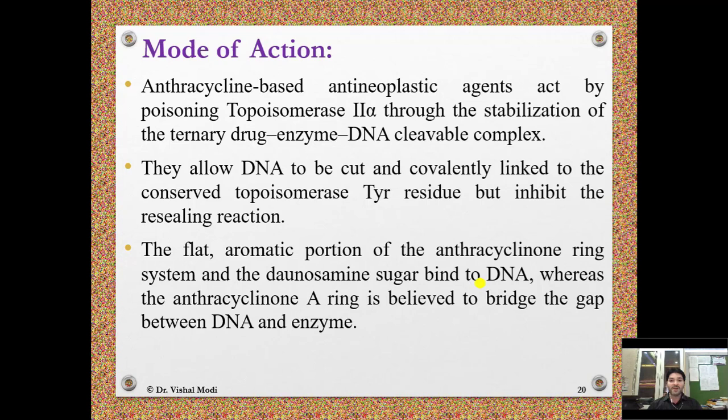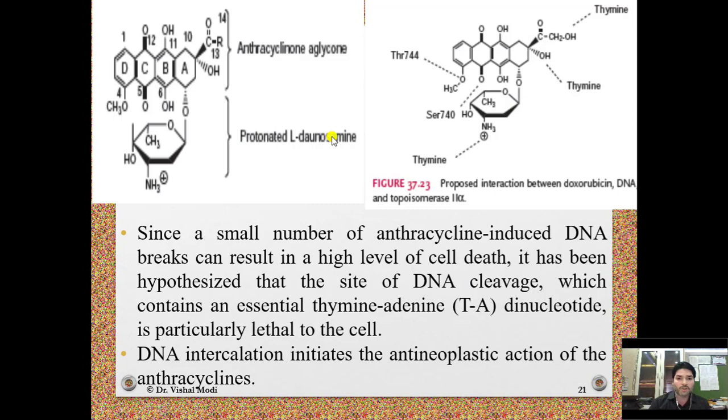Mode of action: Anthracycline-based antineoplastic agents act by poisoning topoisomerase 2 alpha through stabilization of the ternary drug-enzyme-DNA cleavable complex. They allow DNA to be cut and covalently linked to the conserved topoisomerase tyrosine residue but inhibit the resealing reaction. The flat aromatic portion of the anthracyclinone ring system and the daunosamine sugar bind to DNA, whereas the anthracyclinone A ring is believed to bridge the gap between DNA and enzyme.